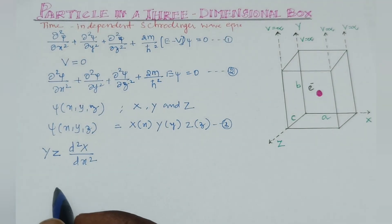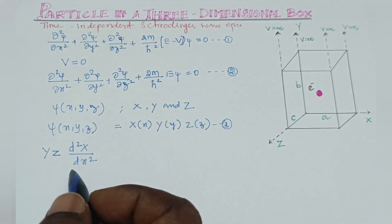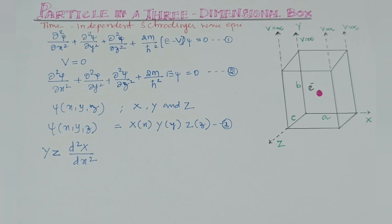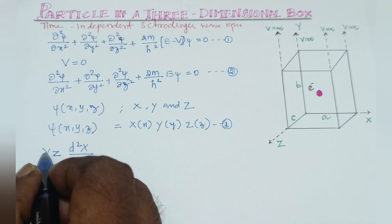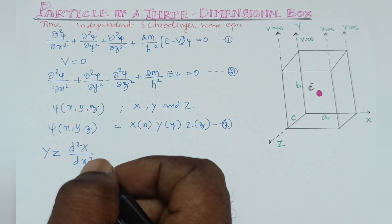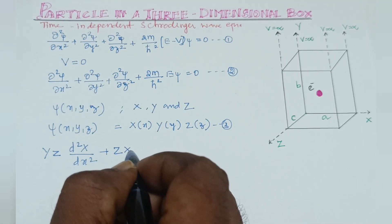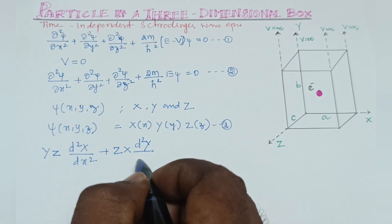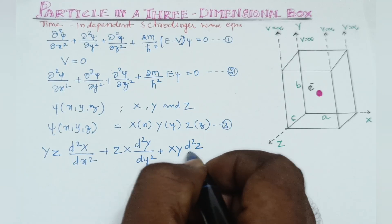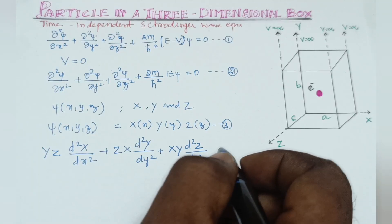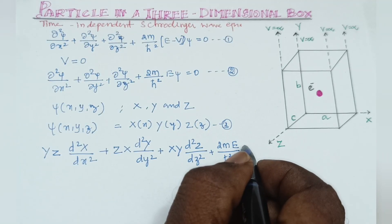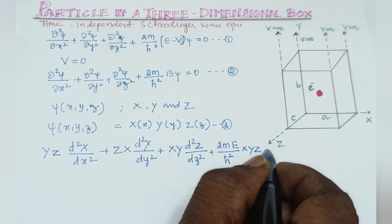We use partial derivative equations because the functions are variables x, y, and z. We can write the partial derivatives: Y·Z·(d²X/dx²) + X·Z·(d²Y/dy²) + X·Y·(d²Z/dz²) + (2mE/ℏ²)·X·Y·Z = 0. This is equation number 4.